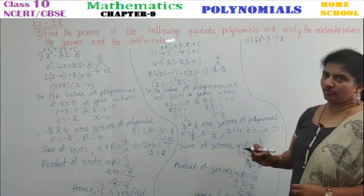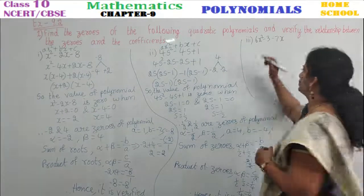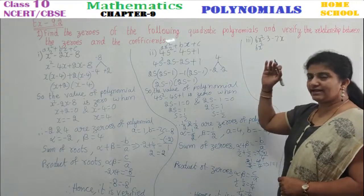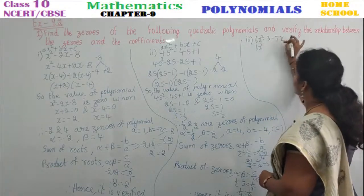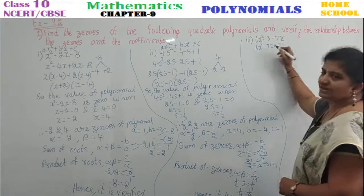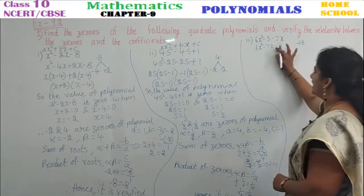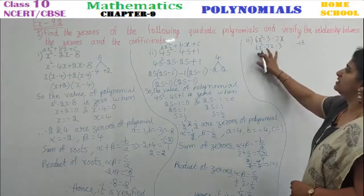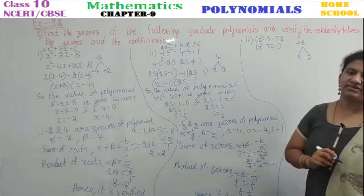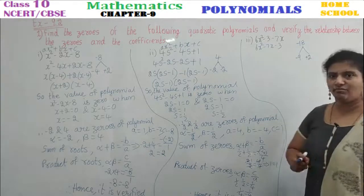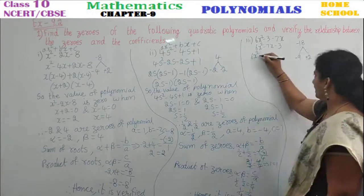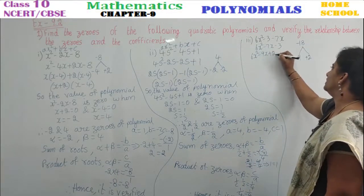First, we need to arrange the polynomial in proper order — from highest power to decreasing powers. So rewrite as 6x² - 7x - 3. Now factorize: multiply 6 by -3 to get -18. Find factors of -18 that add to -7: take -9 and +2, since -9 + 2 = -7 and (-9)(+2) = -18. Split the middle term: 6x² - 9x + 2x - 3.